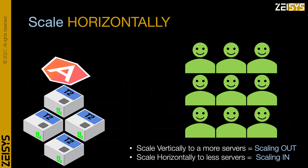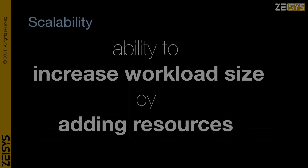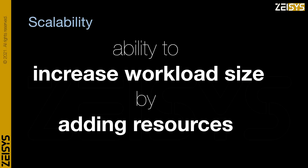The second solution is to run the application on four servers and network them to operate as one single unit. This process is called horizontal scaling. Scalability is defined as the ability to increase workload by adding resources.